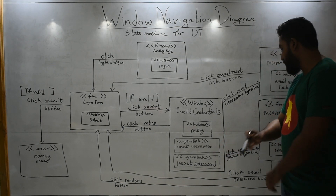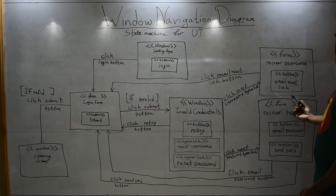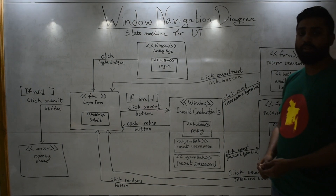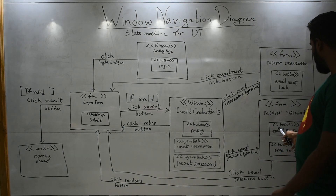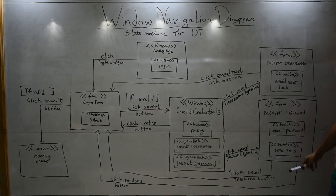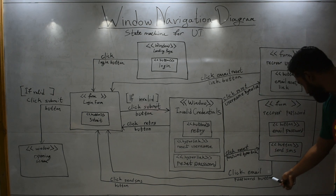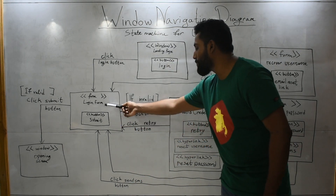When you click the 'reset password' hyperlink — 'click reset password hyperlink' — it takes you to another form: 'recover password'. Here you can have your password recovered using your email, or try to recover using SMS, so we have two buttons with their stereotypes and button names. When you click these — either 'click email password button' after entering your email, or 'click send SMS button' after entering your mobile number — it brings you back to your login form.